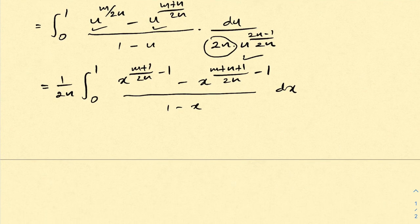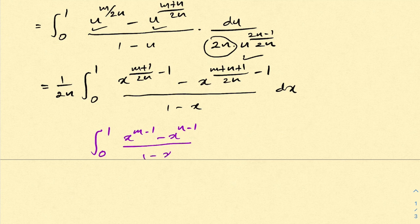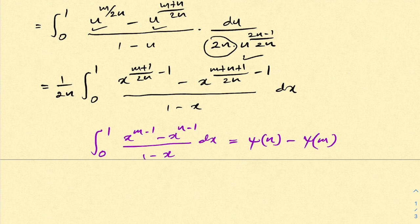In a previous video I solved this integral: the integral from 0 to 1 of x to the m minus 1 minus x to the n minus 1 over 1 minus x dx equals digamma of n minus digamma of m. If you would like to watch that video, I will add the link in the description and also make a card.